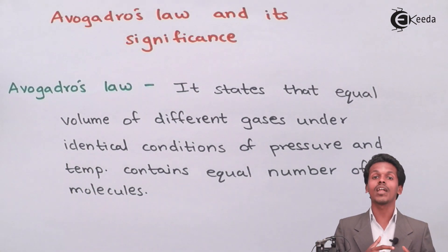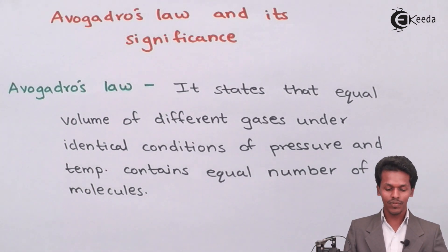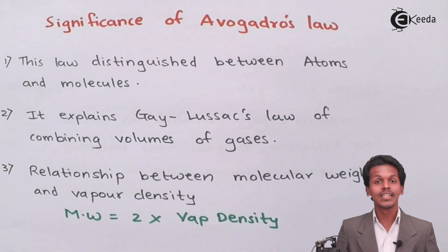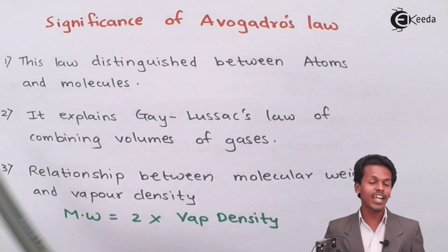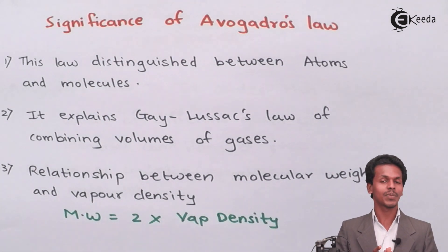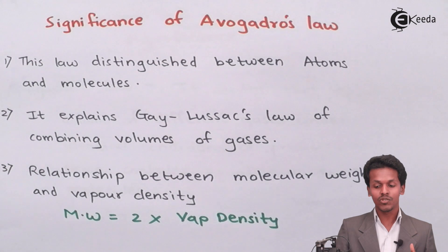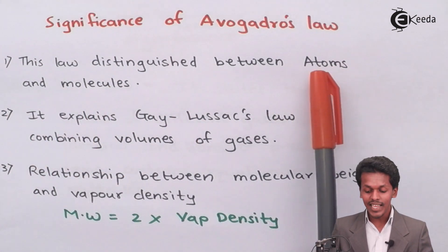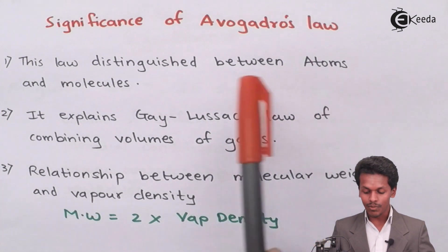Based on that, let us see the significance of Avogadro's Law and what we can find out from it. The first significance is that this law distinguishes between atoms and molecules. Avogadro's Law relates to the number of particles present in a fixed volume. So we can estimate whether the number of particles calculated refers to molecules or atoms, and hence we can clearly differentiate between atoms and molecules.